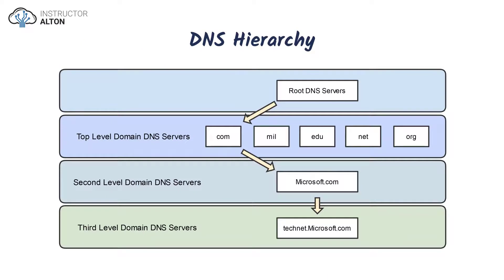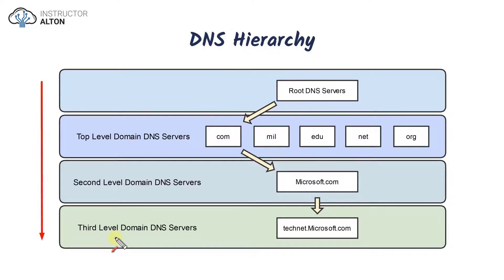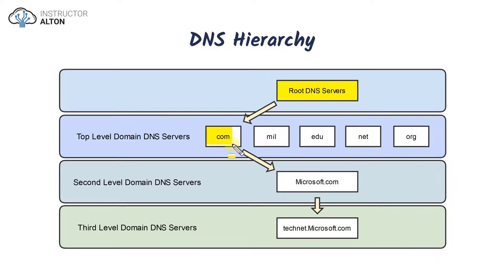To finish off this lecture, let's look at DNS hierarchy. When it comes to DNS servers, there is a hierarchy. When you send a query to a DNS server, if it doesn't know the domain name, it takes you through a process — sending you up to root DNS servers, which tell you where to go. For example, if somebody wants to reach instructoralton.com but their local DNS server doesn't know it, the request goes to root DNS servers, which direct it to the appropriate top-level domain server — .com, .mil, .edu, .net, .org, etc.